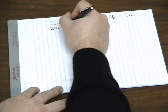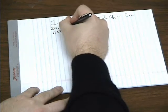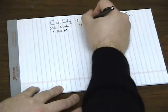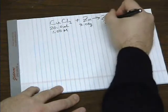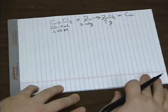Say you react 20 milliliters of 1.5 molar copper 2 chloride with 3 grams of zinc. How many grams of zinc chloride should we get?